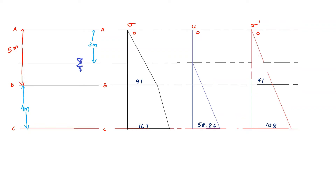Now we look at the variation. From the top layer to the water table, and from the water table down through the 4-meter clay layer. The total stress at BB is 91 kN/m². Pore pressure starts from zero at the water table and increases linearly. Effective stress values are plotted showing triangular variation between these computed points.